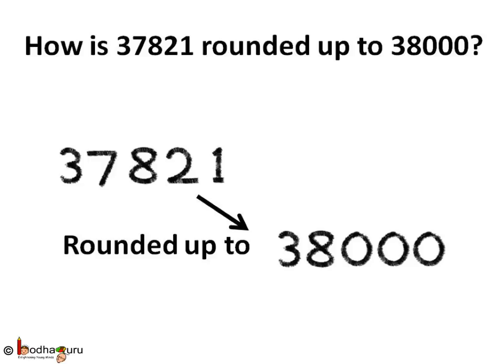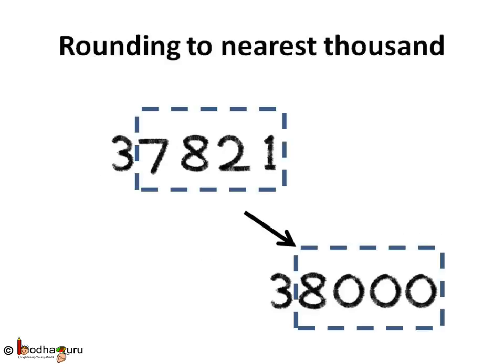Now what did we do when we rounded up 37,821 to 38,000, which was the town's population? Was it rounded to nearest 100 or 10's? Well, we rounded up to 1000's place. How? See, 1000's place is increased by 1.